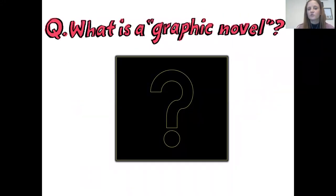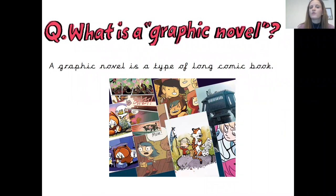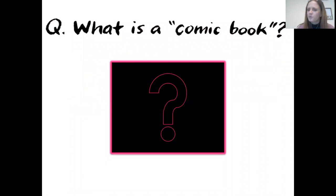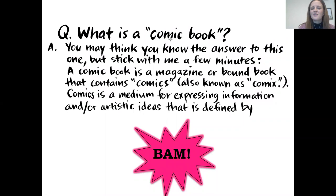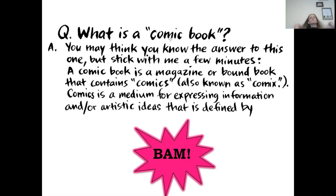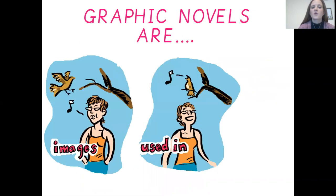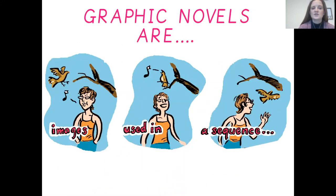So what is a graphic novel? A graphic novel is a type of long comic book. A comic book is a magazine or bound book that contains comics — a medium for expressing information or an artistic idea. It's defined by exciting information, short sentences, and pictures and text written together. Graphic novels use images in a sequence, so these images on the page tell us a story just by looking at what is happening, and we've also got the text that goes with it.